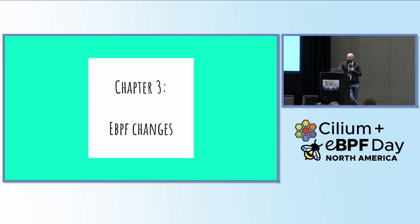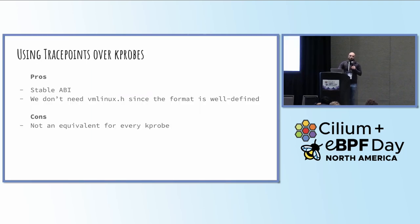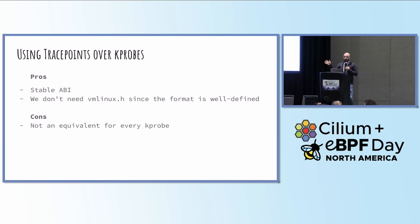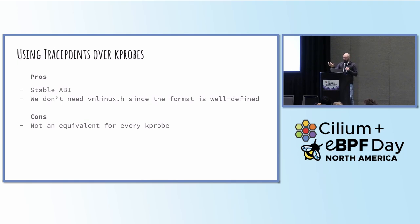We made some changes on the eBPF side. We looked at the kprobes we were using and it became immediately obvious that we didn't have to use kprobes — we could use trace points. There are advantages: the ABI is stable, so the kernel can continue to evolve and our trace points will just work. The only con was that one of the places we were using the kprobe didn't have a trace point, but we'll cover that later.